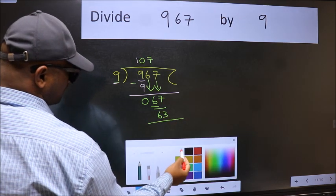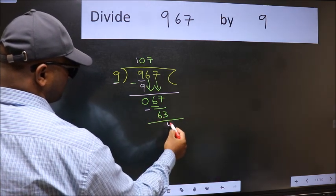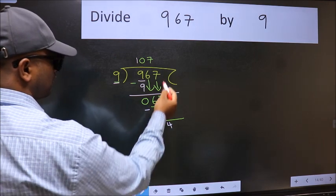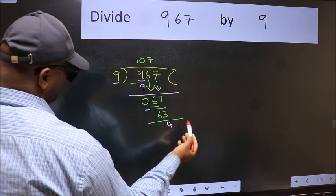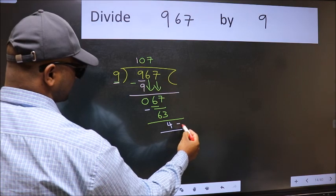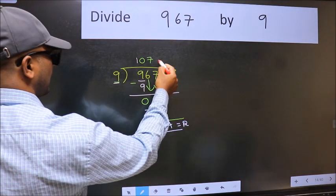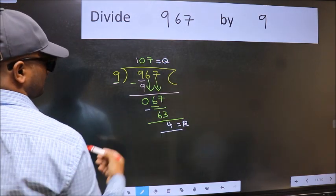Now we should subtract. We get four. No more numbers to bring down, so we stop here. This is our remainder and this is our quotient.